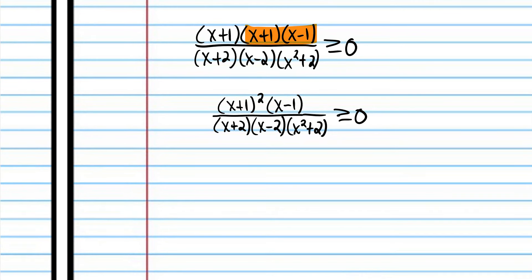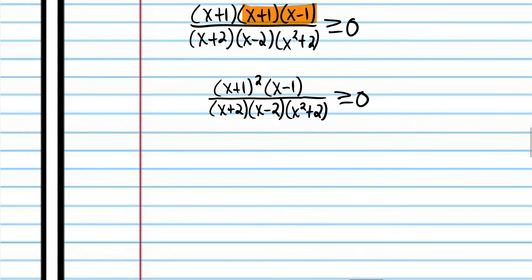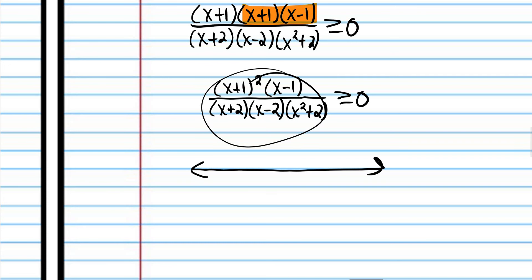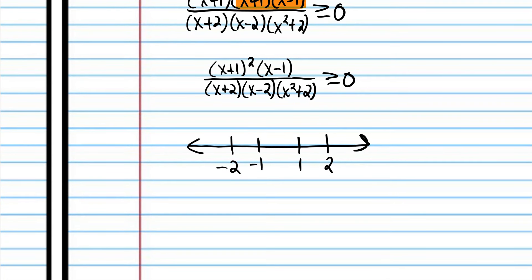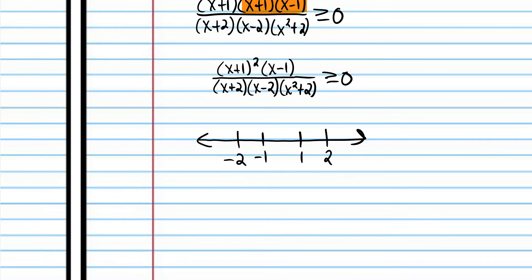Now we're ready to do a sign chart. Whatever numbers make this expression zero will have closed dots because it says greater than or equal to. We have two, negative two, one, and negative one. The sum of two squares expression won't lead us to any helpful number.